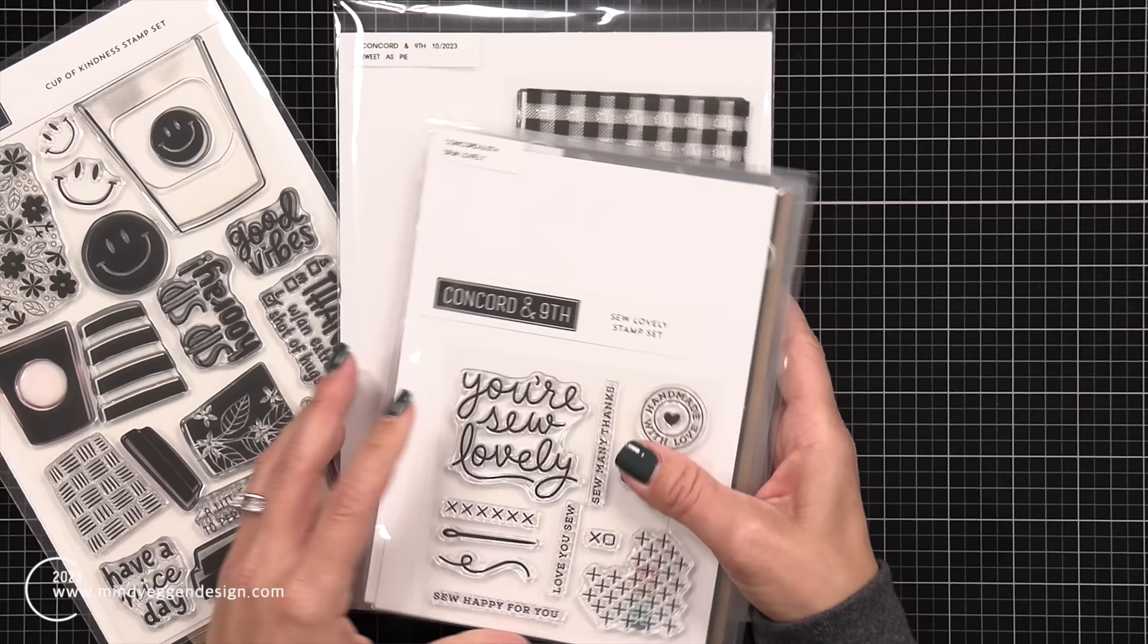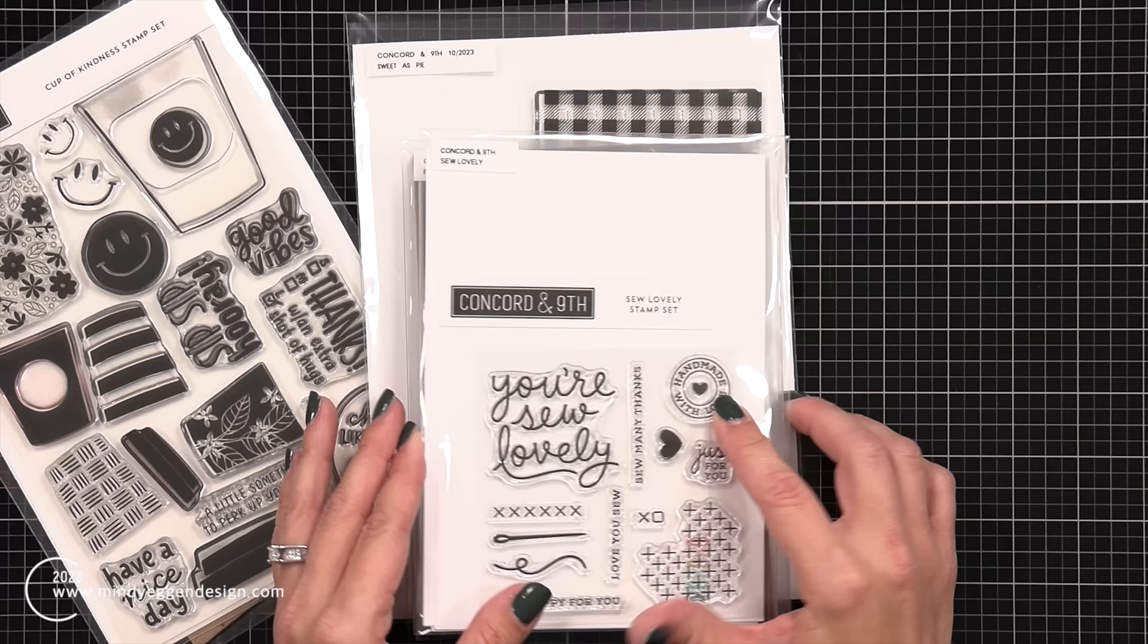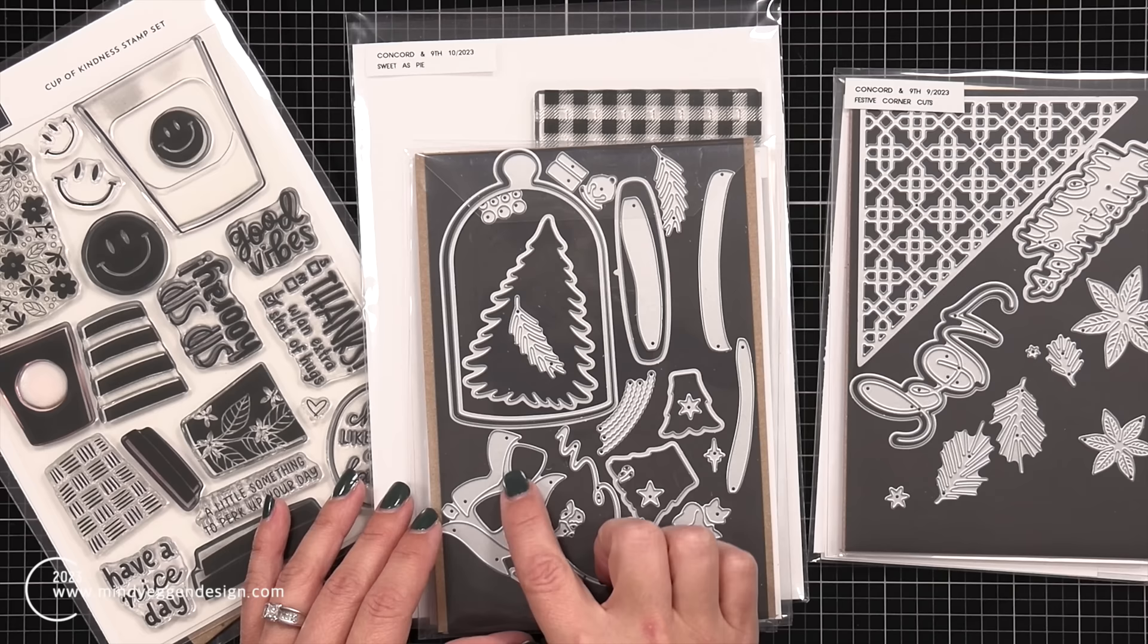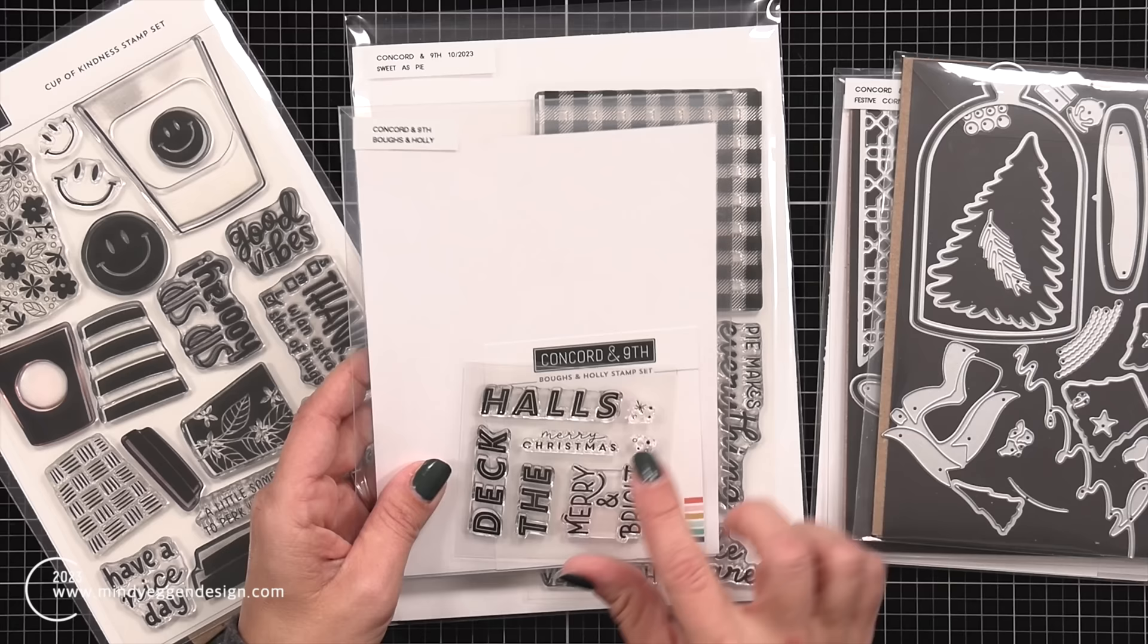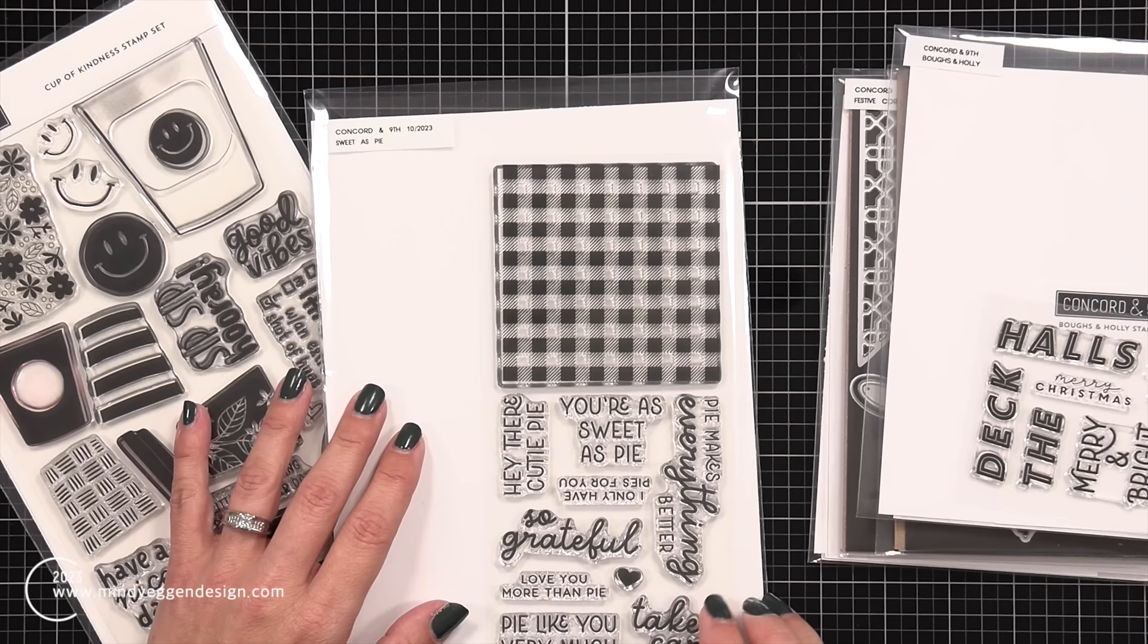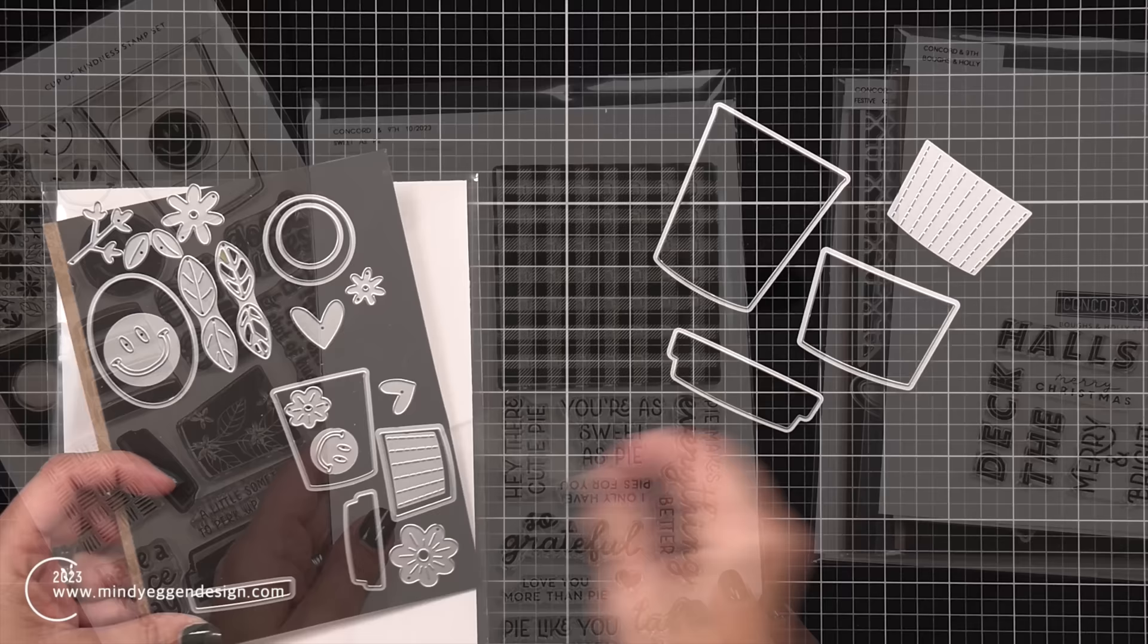Now here are some additional products that I pulled out to work with the Cup of Kindness die set. So I have the So Lovely stamp set, I really like that handmade with love image. I have the festive corner die, I'm going to be using the poinsettia for that. Then I have the Christmas cloche, I thought about using the bow, and for sentiments this is off of the Bows and Holly. And then we have Sweetest Pie stamp set which has that gingham background.